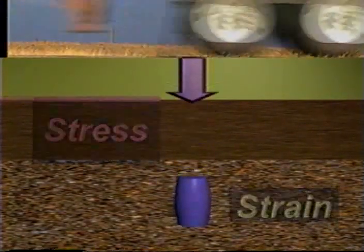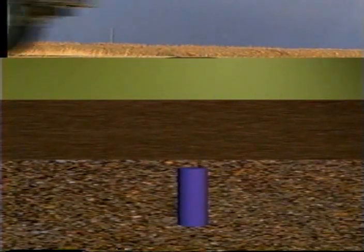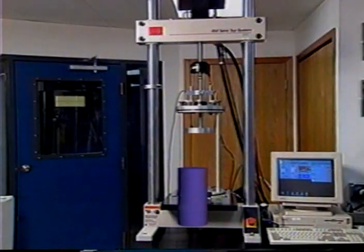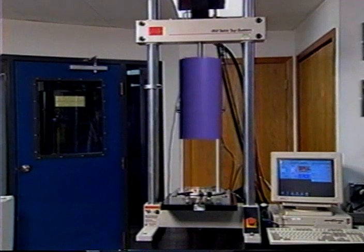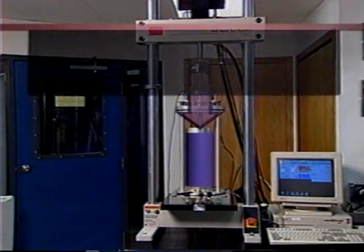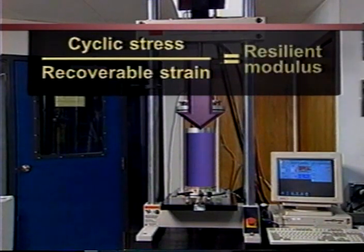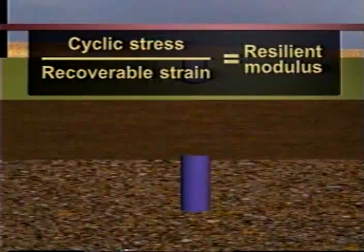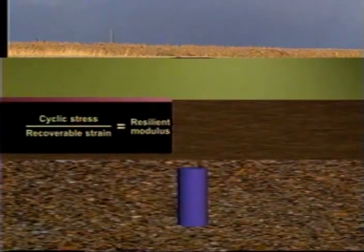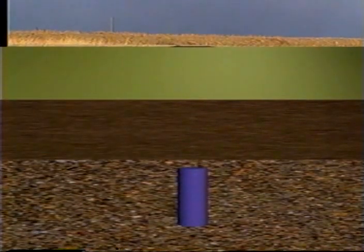But the material never quite regains its original shape. Instead, there is an extremely small but nonetheless cumulative distortion, leading eventually to pavement distress. In resilient modulus testing, we simulate the stress and then measure both the change in stress and the recoverable strain. The resulting resilient modulus values become an essential input to the pavement design process.